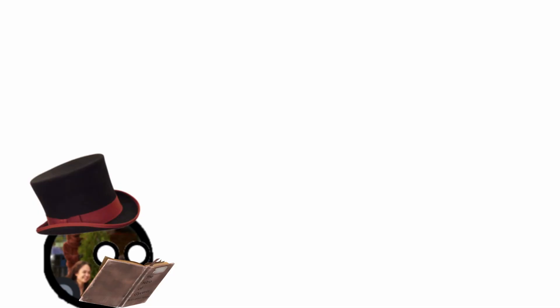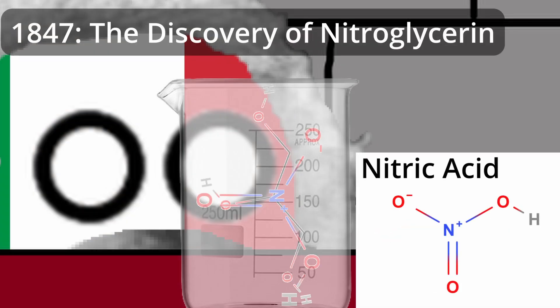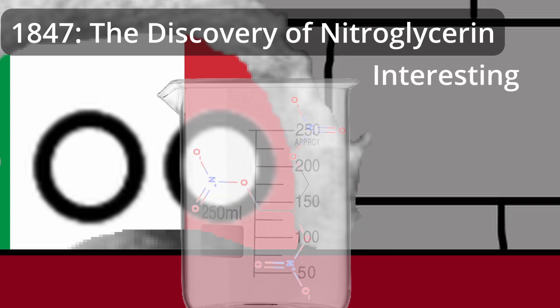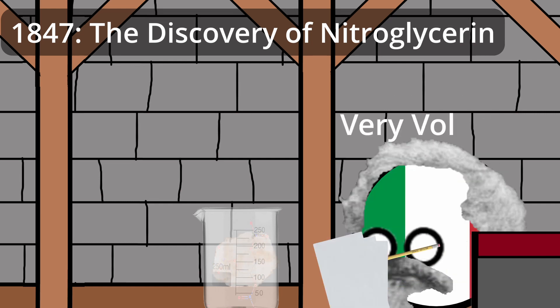So it all started with an Italian chemist named Ascanio Sobrero discovering the chemical by mixing glycerol, nitric acid, and sulfuric acid together. He observed that this chemical was highly explosive and too volatile to be of good use, noting that it would be unlikely to be used as a viable explosive.